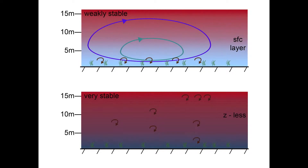In the weakly stable case, eddies are constrained by the ground surface. In this idealized example, the smallest eddies are constrained to the lowest few meters (small brown loops), mid-sized eddies in the lowest 10 meters (green loops), and yet larger eddies constrained primarily in the lowest 15 meters (blue), and so forth. While turbulence is never this simple, this illustration of the potential influence of the ground surface forms the basis of existing similarity theory for parameterizing turbulence and turbulence fluxes near the surface.